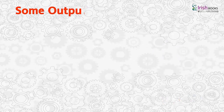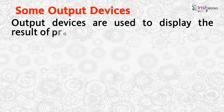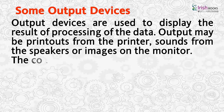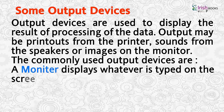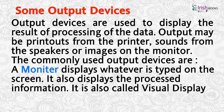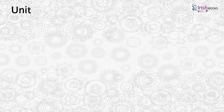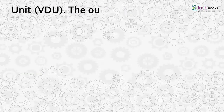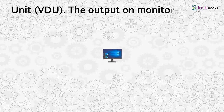Some output devices. Output devices are used to display the result of processing of the data. Outputs may be printouts from the printer, sounds from the speakers or images on the monitor. A monitor displays whatever is typed on the screen. It also displays the processed information. It is also called visual display unit, VDU. The output on the monitor is called soft copy.